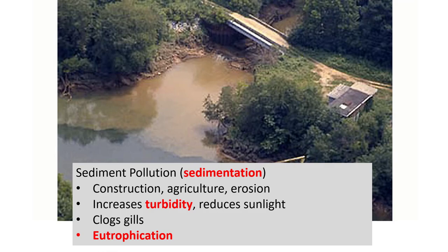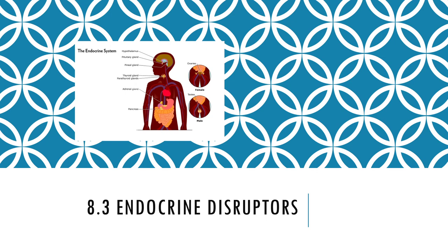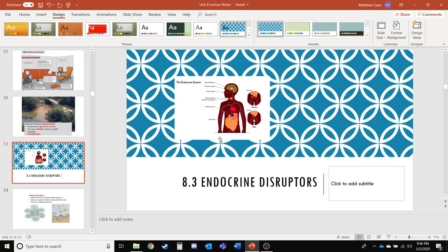Sediment pollution — sedimentation — typically comes from construction, agriculture, and erosion. This increases turbidity, which reduces sunlight, causing lower plant life that can't photosynthesize. It can also clog gills and encourage eutrophication. That is the end of this video — our next video will be all about endocrine disruptors.